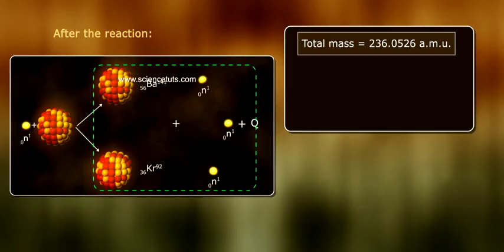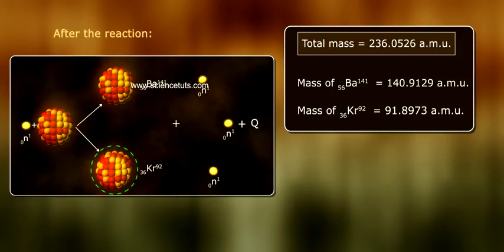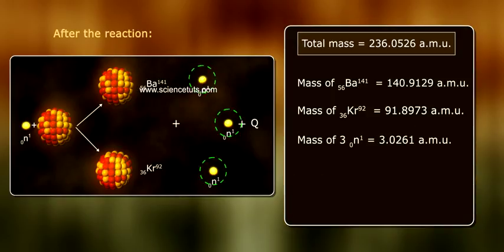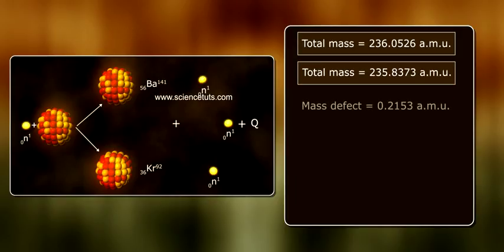After the reaction: Mass of 56Ba-141 equals 140.9129 atomic mass units. Mass of 36Kr-92 equals 91.8973 atomic mass units. Mass of 3 neutrons equals 3.0261 atomic mass units. Total mass equals 235.8373 atomic mass units. Mass defect equals 0.2153 atomic mass units.